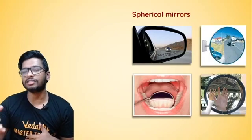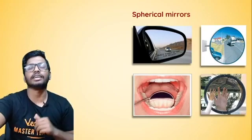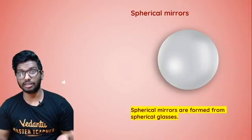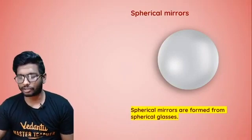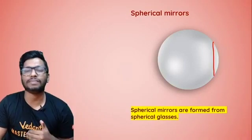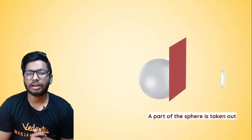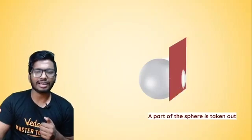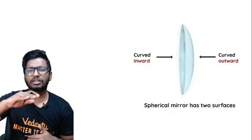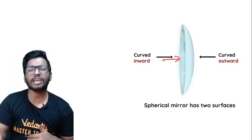What exactly is a spherical mirror and what are the nomenclature you have to be aware of? A spherical mirror is a part of a glass sphere. Imagine a glass sphere — a part of that is what is called a spherical mirror. When you take a small part of it, you can clearly see that there is one part which is curved inwards and another part which is curved outwards — an inner surface and an outer surface.